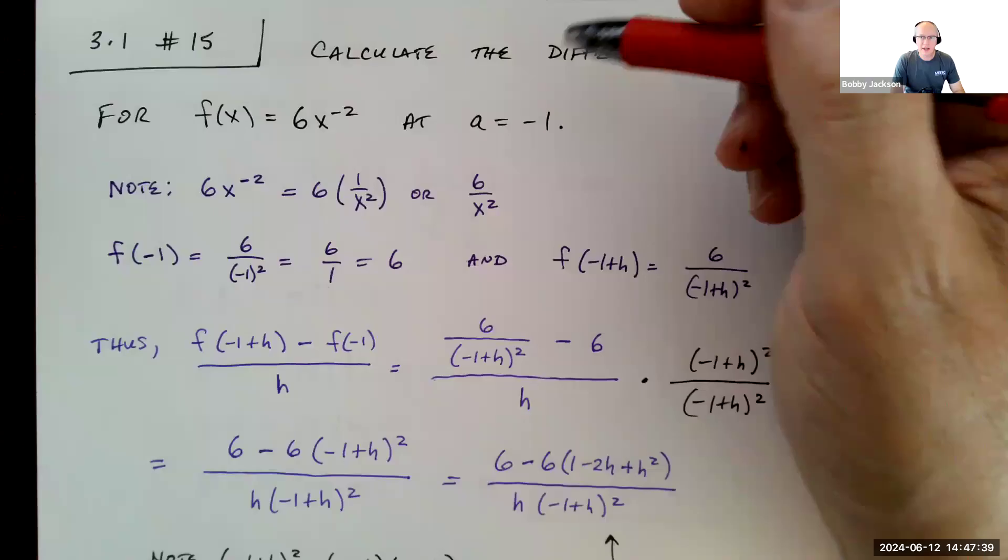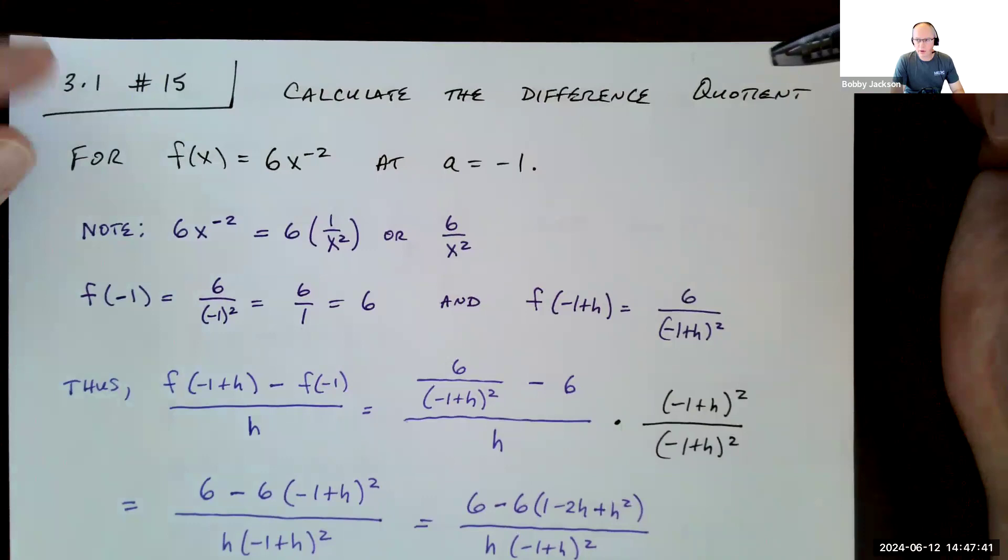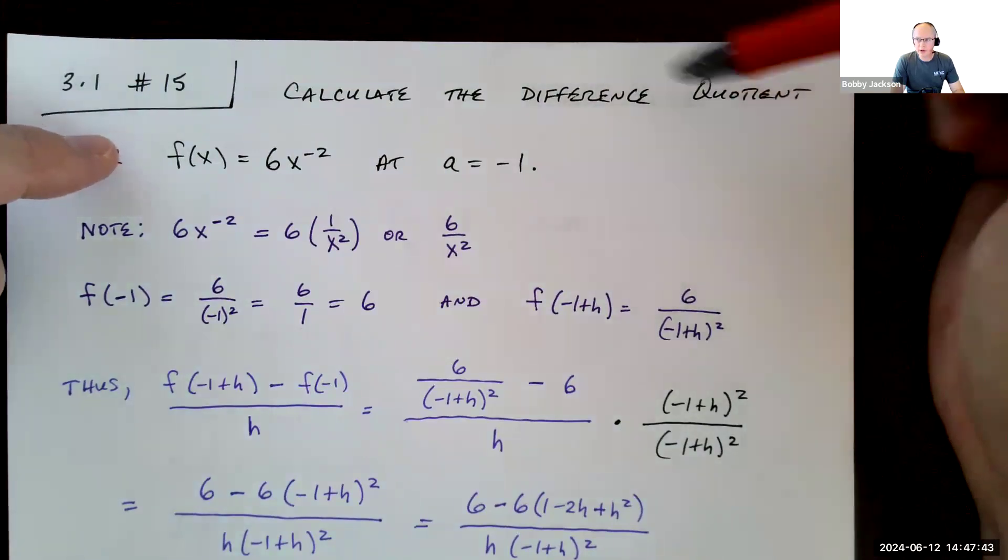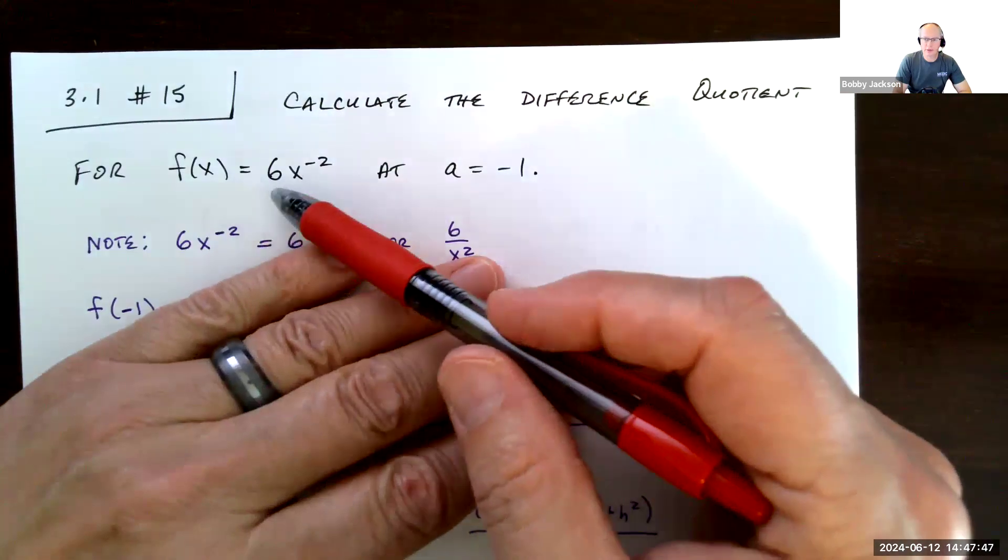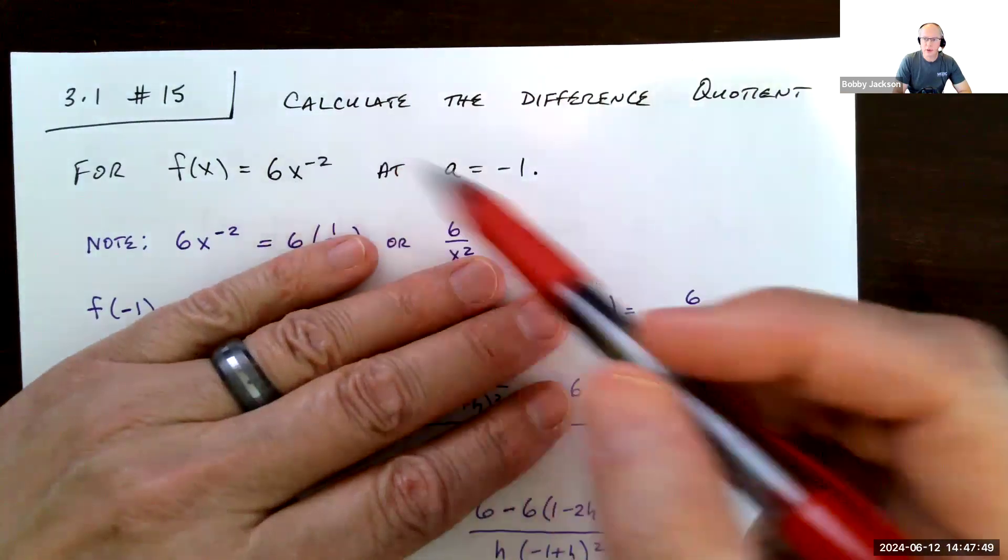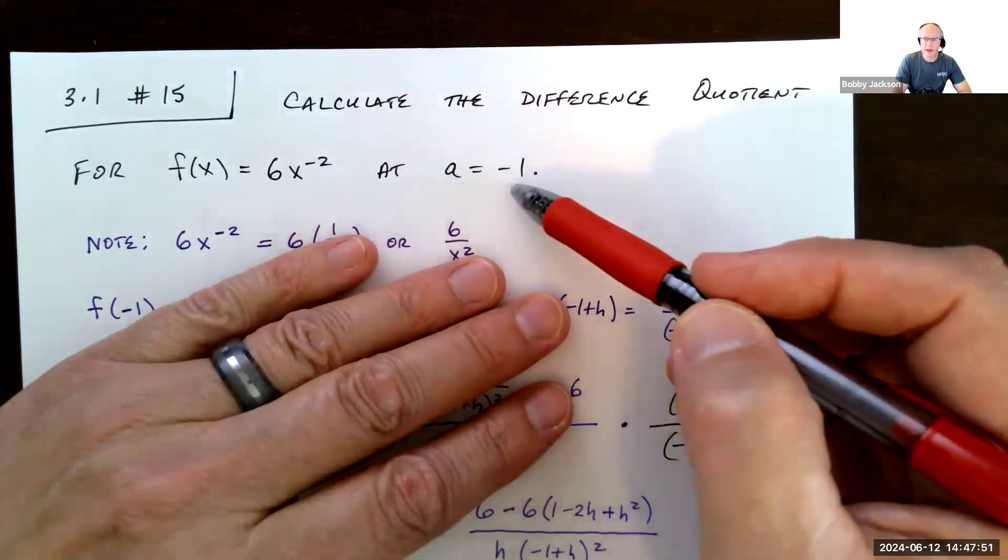Okay, we're going to take a look at number 15 in section 3.1. This is to calculate the difference quotient for the function f(x) equals 6x to the negative 2 at a equal negative 1.